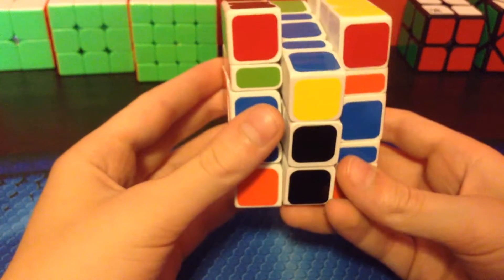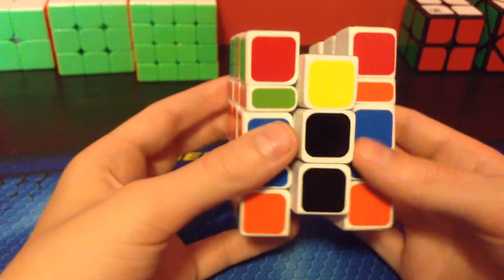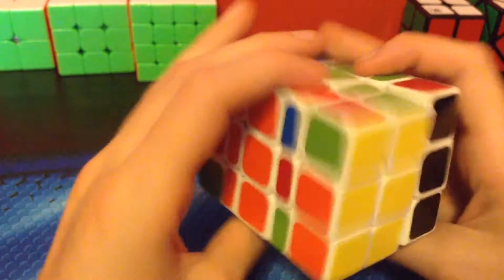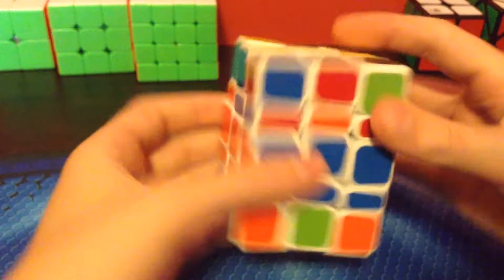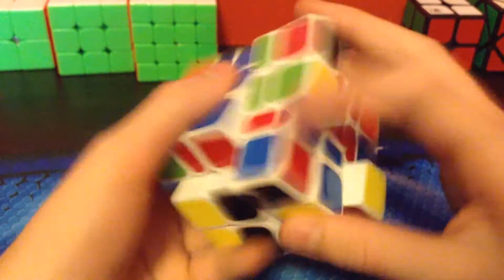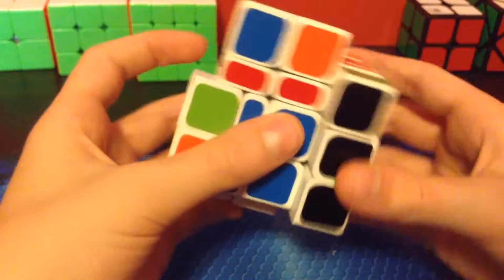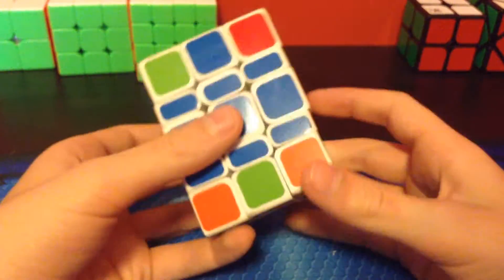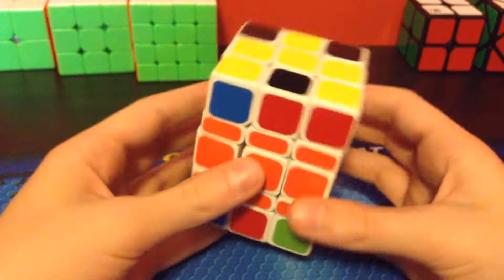you just turn the middle layer up. So, M' U to M, then, now I've just got a T perm. So, I'll do that. Now it's done being solved like a 3 by 3 on the inside.